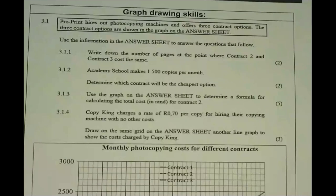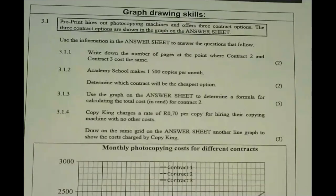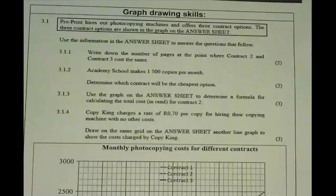The answer sheet is a piece of paper with an English side and Afrikaans side, inside your question paper. A few important things: first, make sure you have a pencil to answer this question. If you make a mistake, you cannot just ask for another answer sheet — your best bet is to flip it over to the other language side. Please make sure you have a pencil.